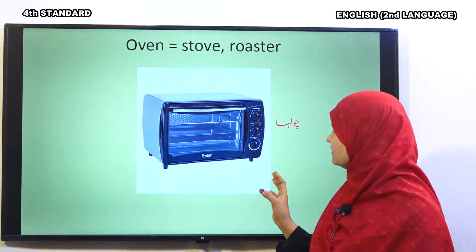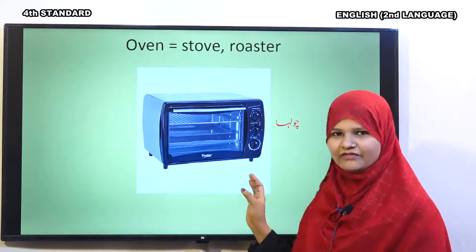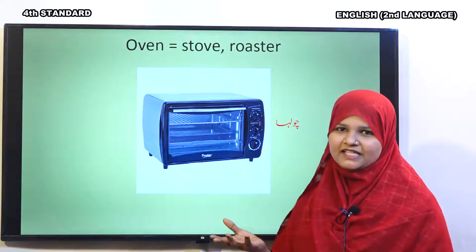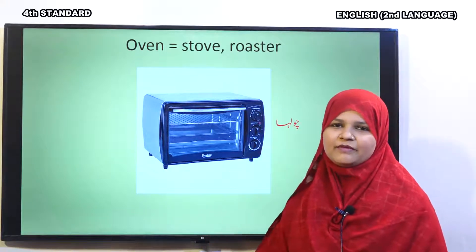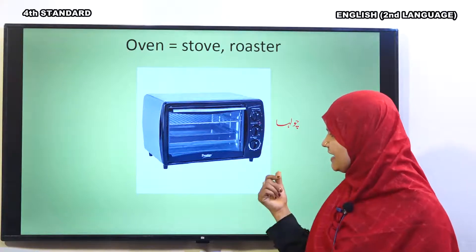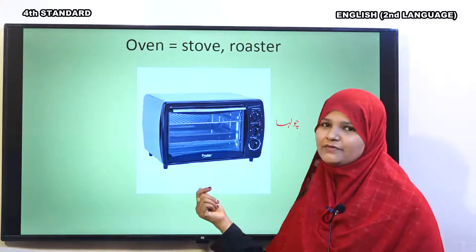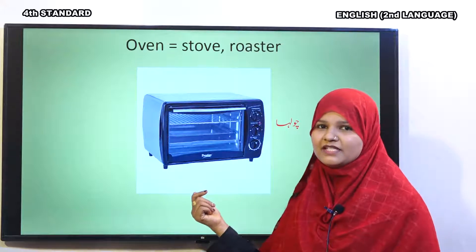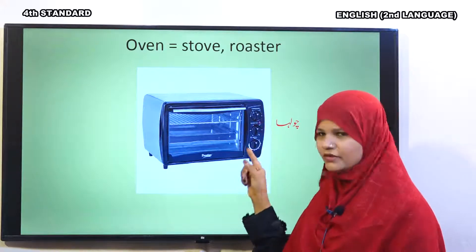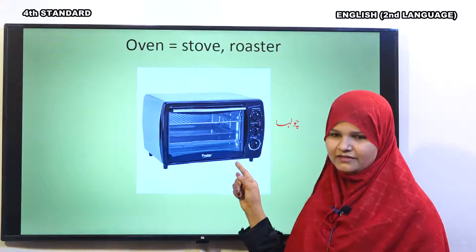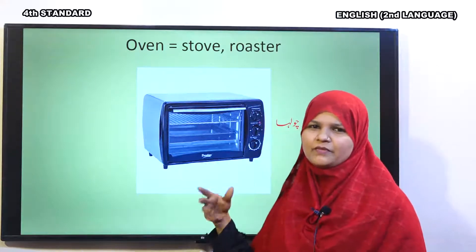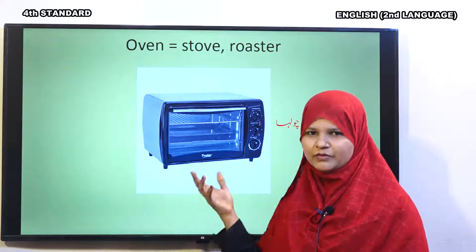This is oven. Do you know oven? Very good. Puraane zamaane mein cheezon ko bake karne ke liye bakeries mein bhaatiyaon ka istemaal kiya jata tha. Lekin aaj kal har jagah ovens dastiyab hain. Oven yaane chulha. This is called oven. We can also call it stub or roaster.